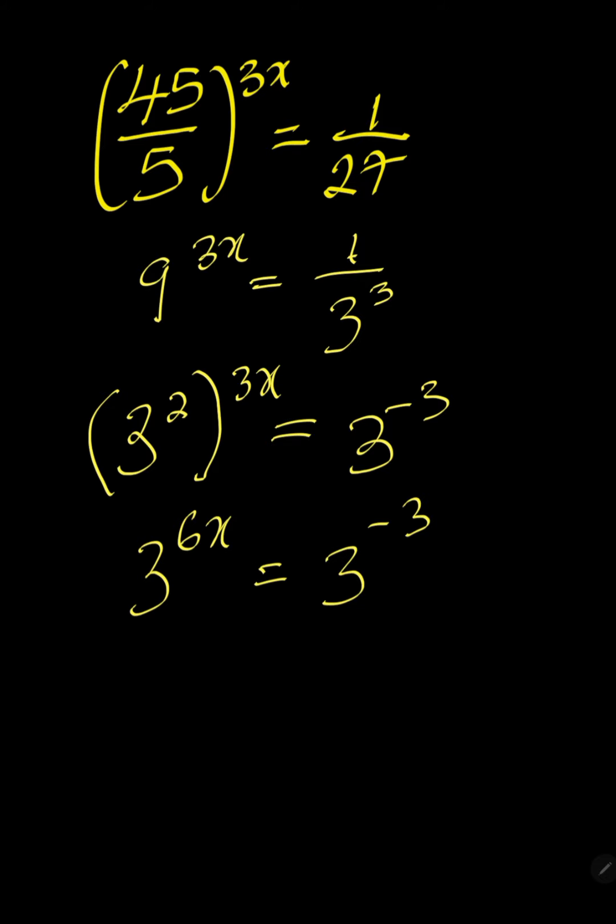Now the bases are the same thing. We can equate the powers. Therefore, 6x is equal to minus 3. To find the value of x, we are dividing everything by 6.